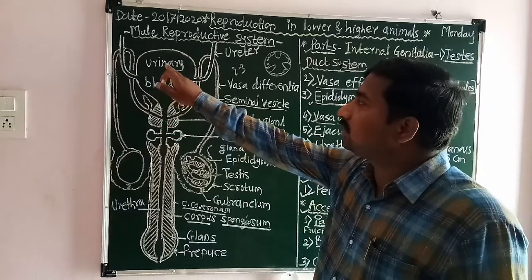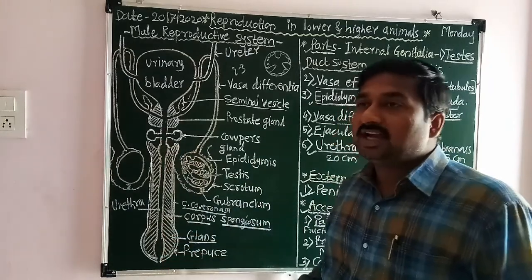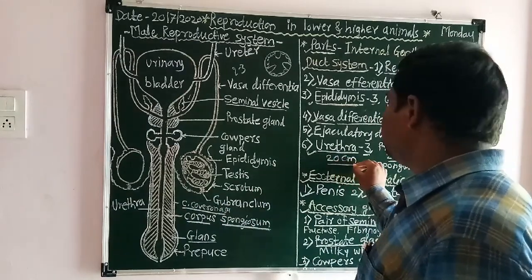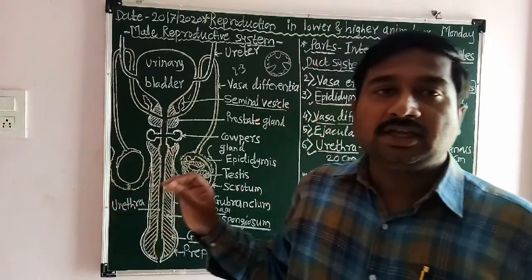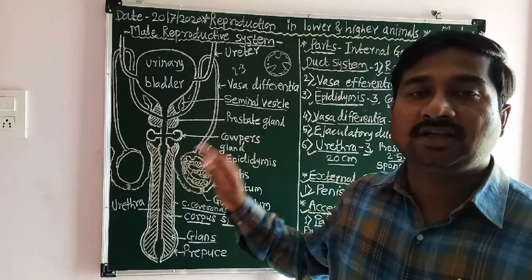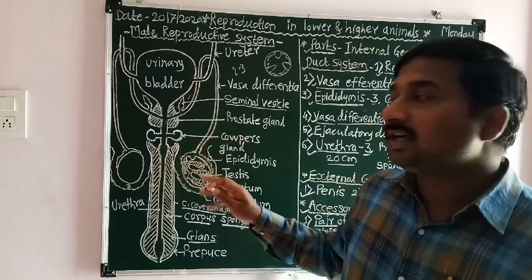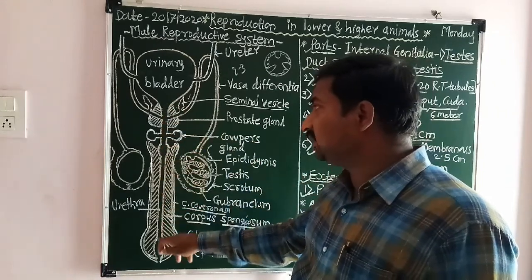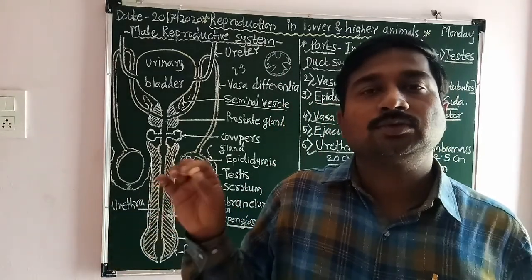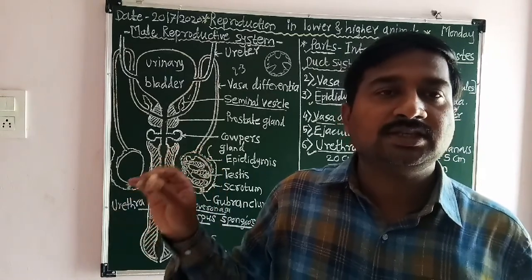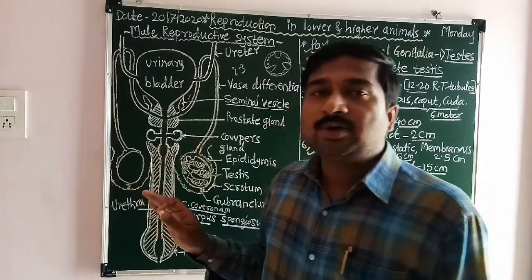The urethra runs through the penis and opens at the tip of the penis. That tubular structure is about 20 centimeters in length. In the male, the urethra acts as the urinogenital duct because it conducts both sperm and urine.